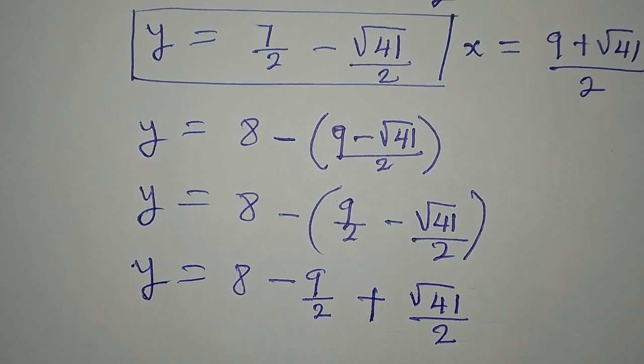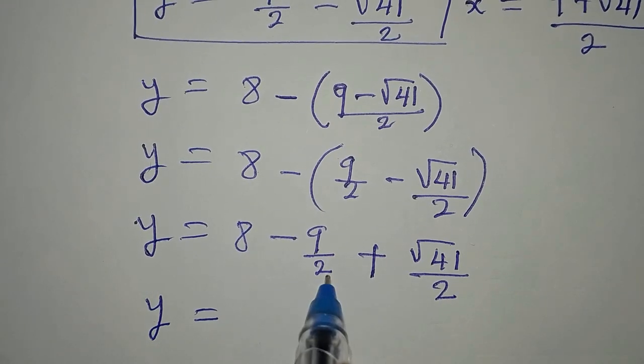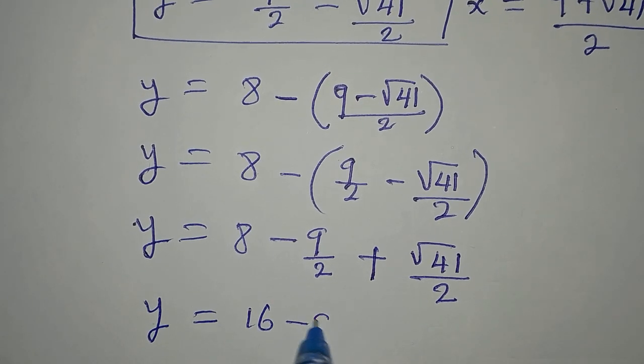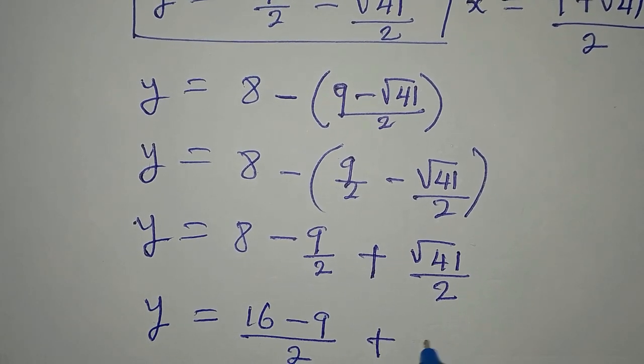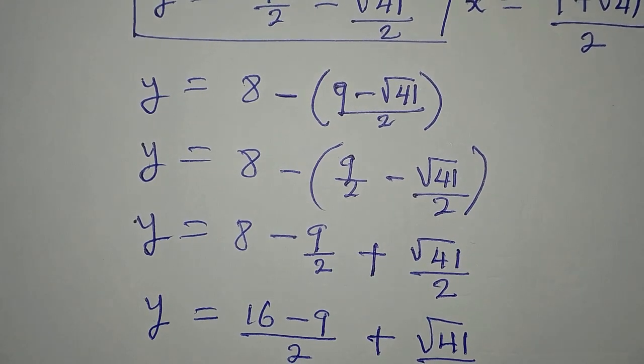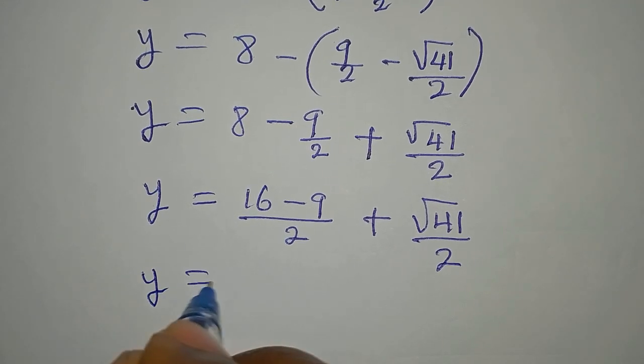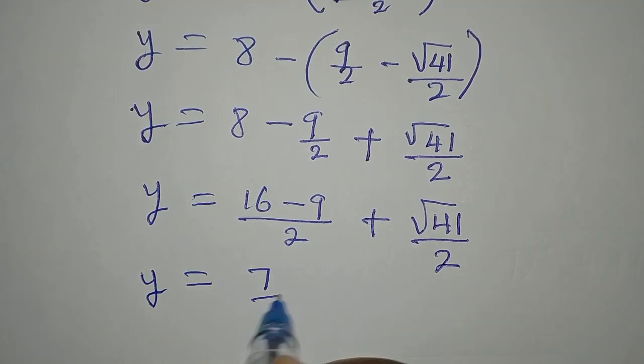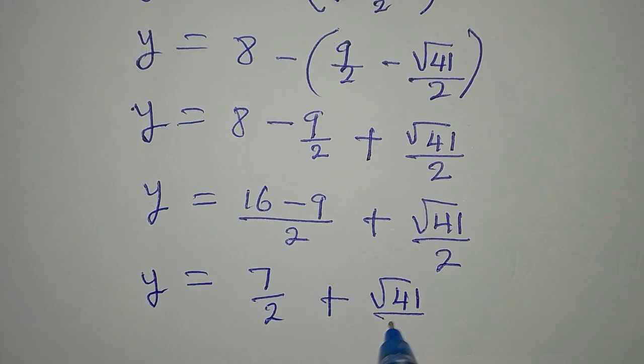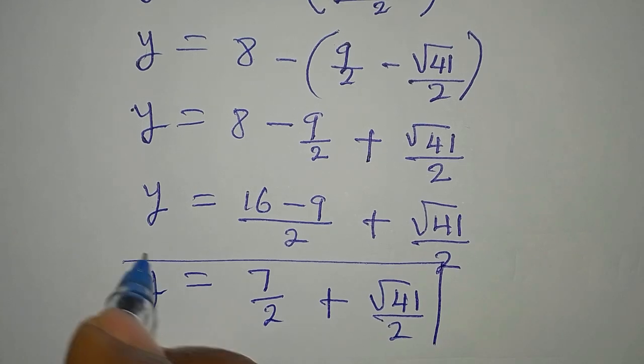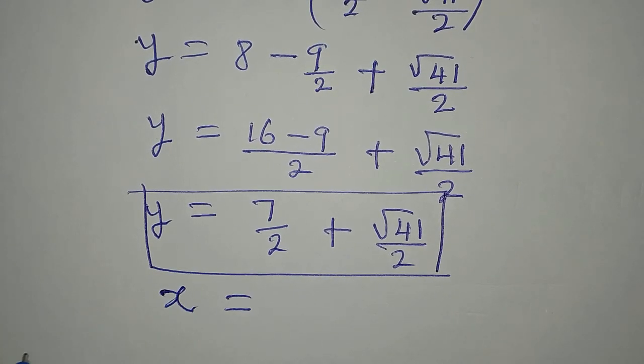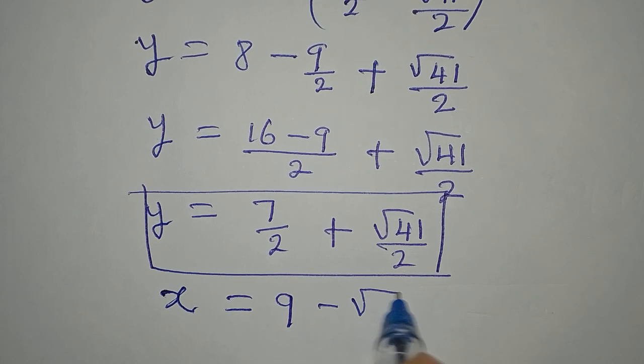So y now will be, this times this will give 16, then minus 9 over 2 plus square root of 41 over 2. So to continue, y will be, this minus this is 7 over 2 plus square root of 41 over 2. So this is what we have for the value of y when x is equal to 9 minus square root of 41 over 2.